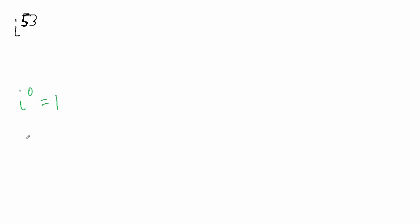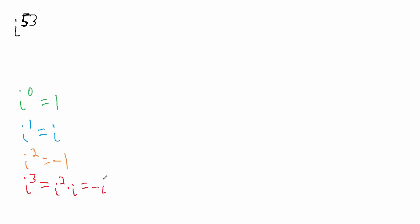What about i to the first? Well, i to the first is just i. What about i squared? i squared is just negative one — remember that whole thing with complex numbers is that i squared is negative one. And then i cubed: i cubed is i squared times i. i squared is negative one, i is just i, so this is negative one times i, which is negative i.